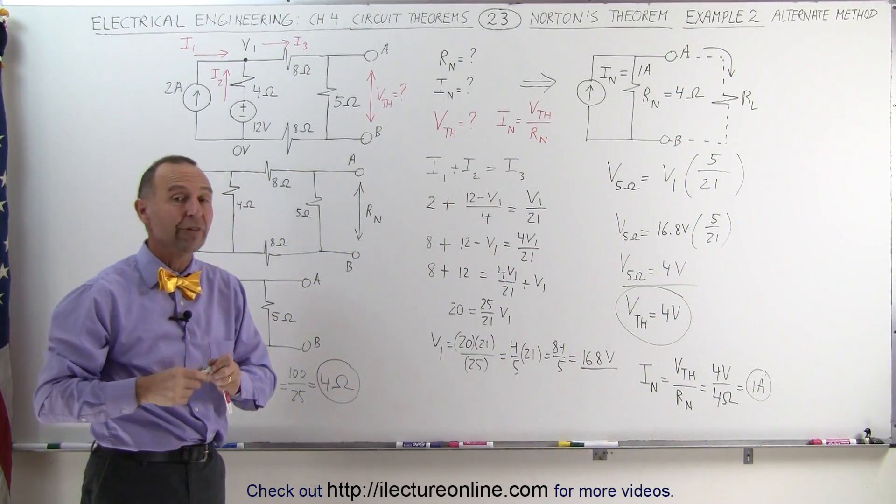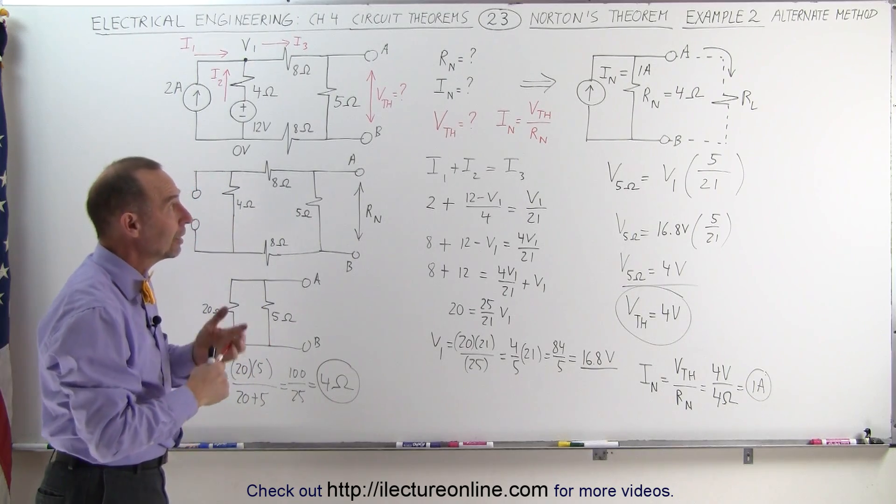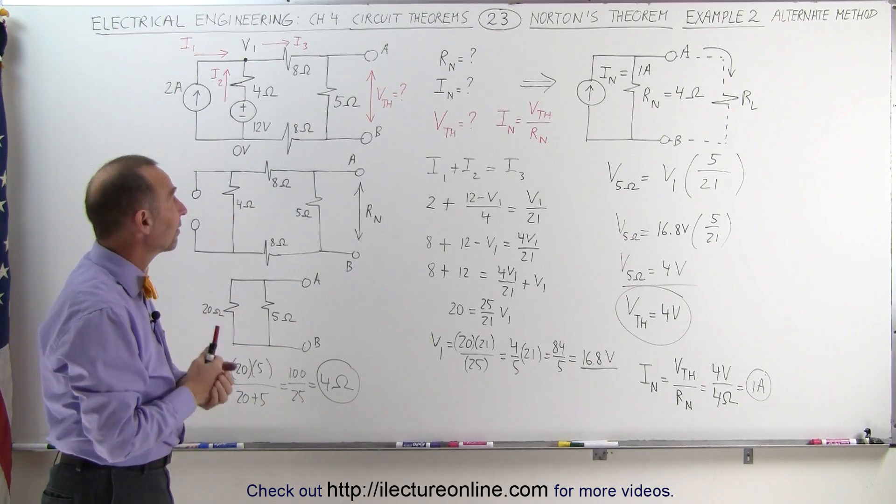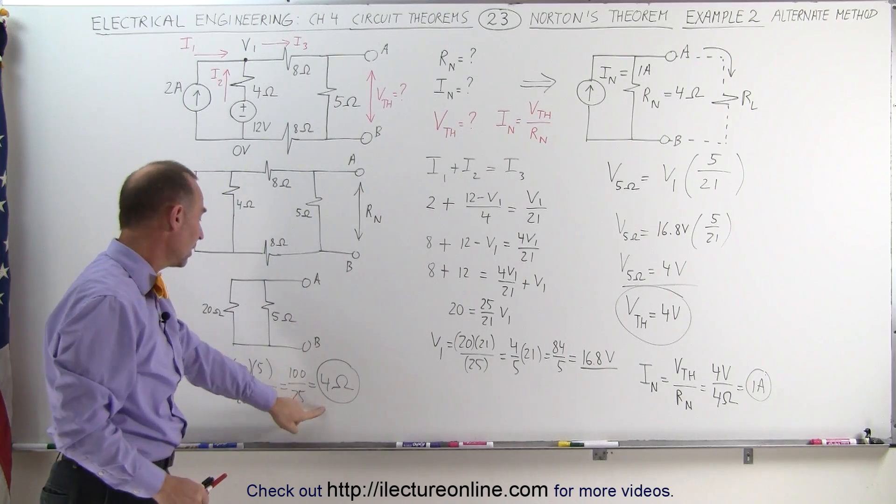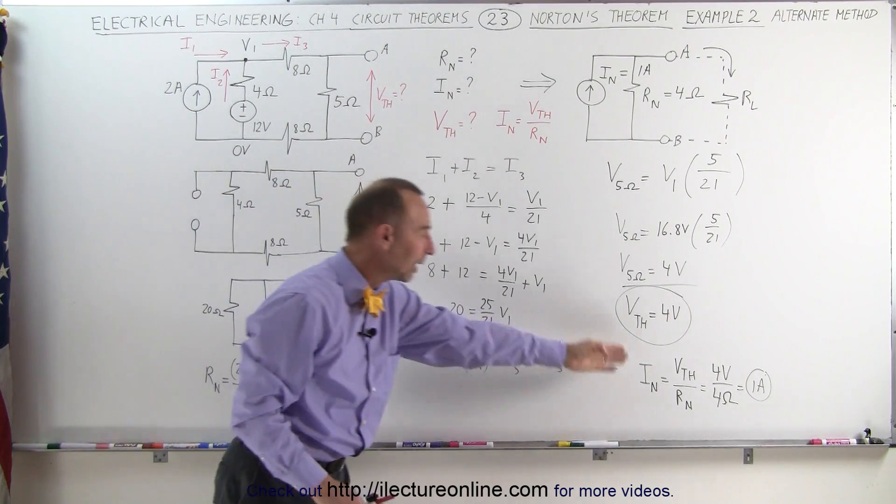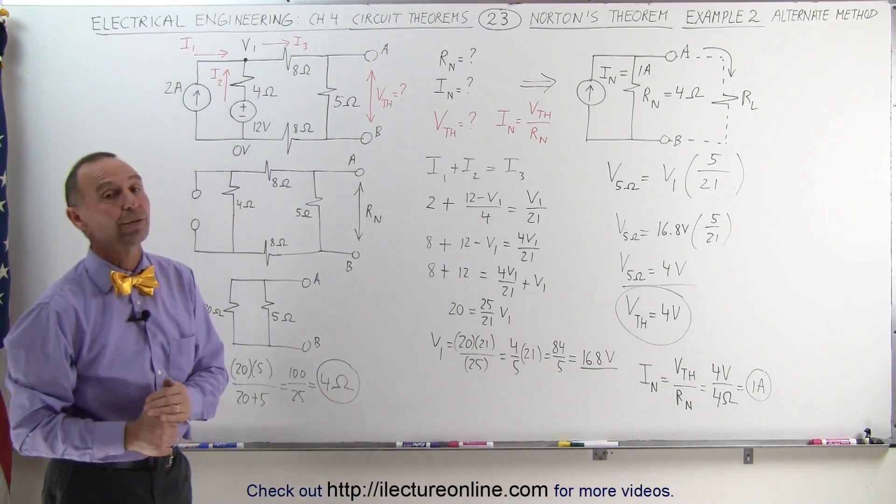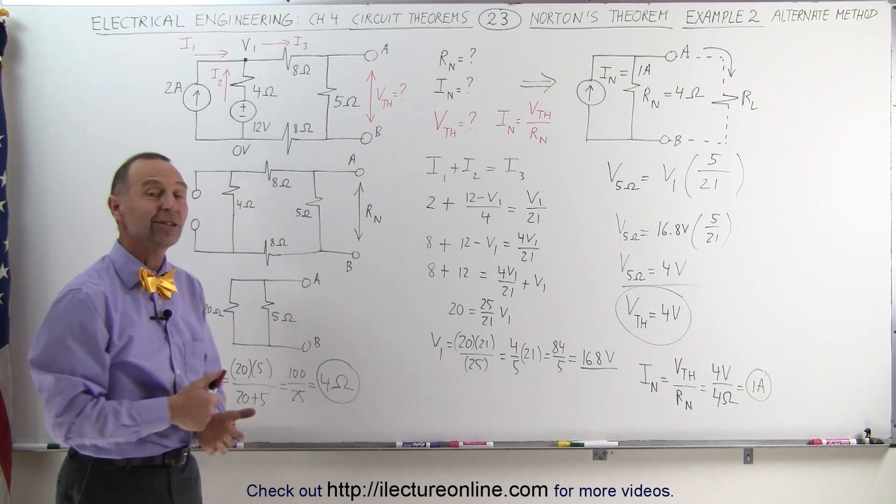So there's another method in which you can find the equivalent Norton current by simply finding the Thevenin voltage, dividing it by the Norton resistance, and then by that ratio you can find the Norton current. And that's how it's done using this particular method.